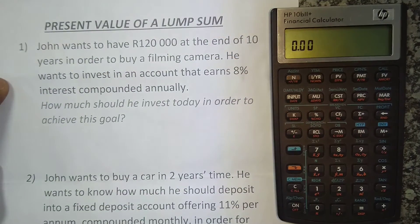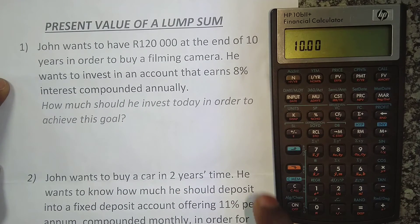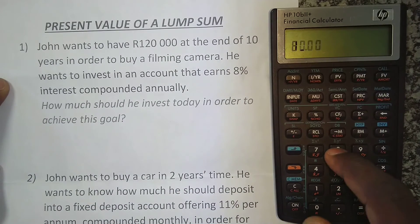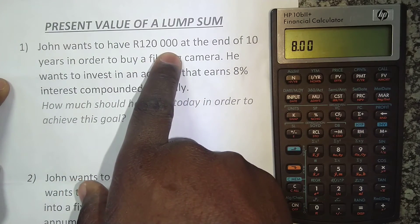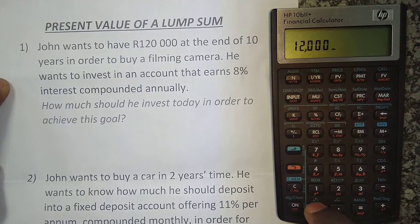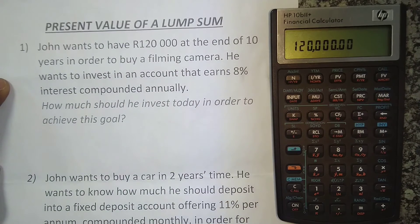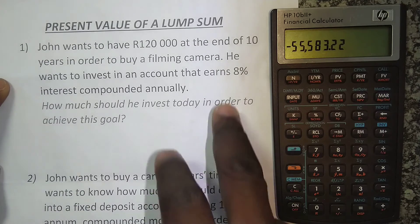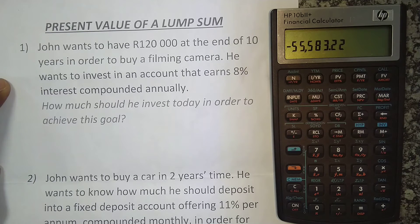We know it's for 10 years, so we press 10 and then N, which stands for the number of compounding periods. Then we have the interest rate of 8%, so we press 8 and then I/Y. Then we have the future value of 120,000, so we press 120,000 and then future value. Now we just press present value, and it tells us he will need to invest 55,583 rand and 22 cents today. That is how you do it — you can see how simple it is.